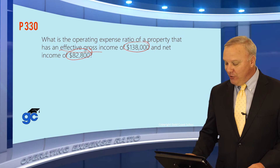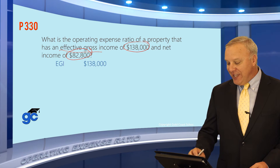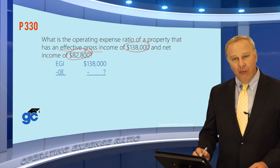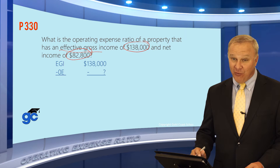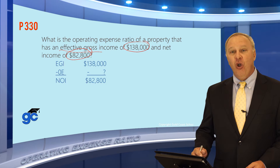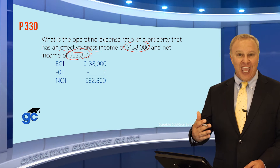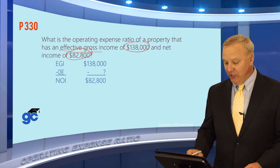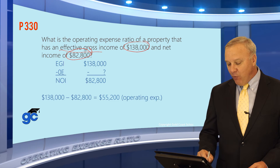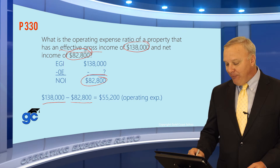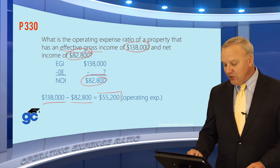This is a little different than what you may be used to for this question. In this case, the EGI is $138,000. We don't know how much the operating expenses are, which is what we need to find out, but we do know that the NOI is $82,800. All we do is take the portion of the stack and work it backwards. We take $138,000 minus $82,800, which was our NOI, and we find that the operating expenses were $55,200.